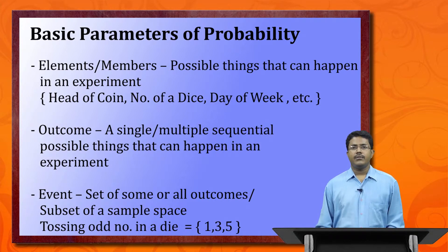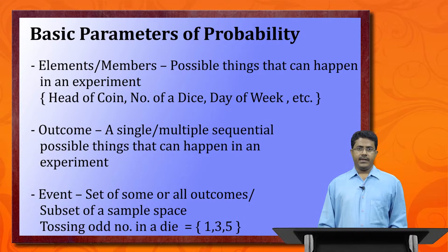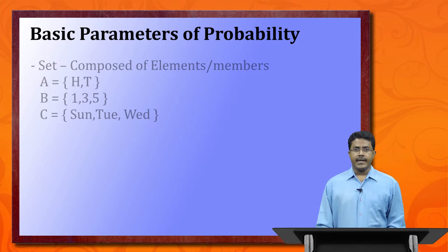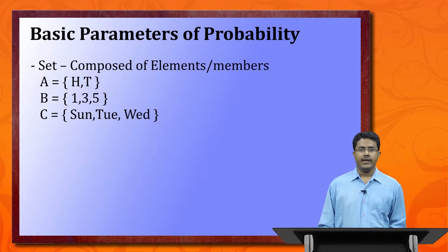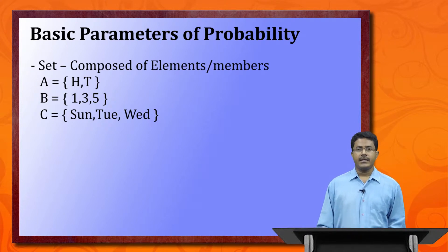For example, rolling a die and wanting to get odd numbers — that defines an event. An event can also be defined as a subset of the sample space, composed of elements or members. For tossing a coin, a set can be {head}; for rolling a die it could be {1, 3, 5}; and for a week it could be {Sunday, Tuesday, Wednesday}.